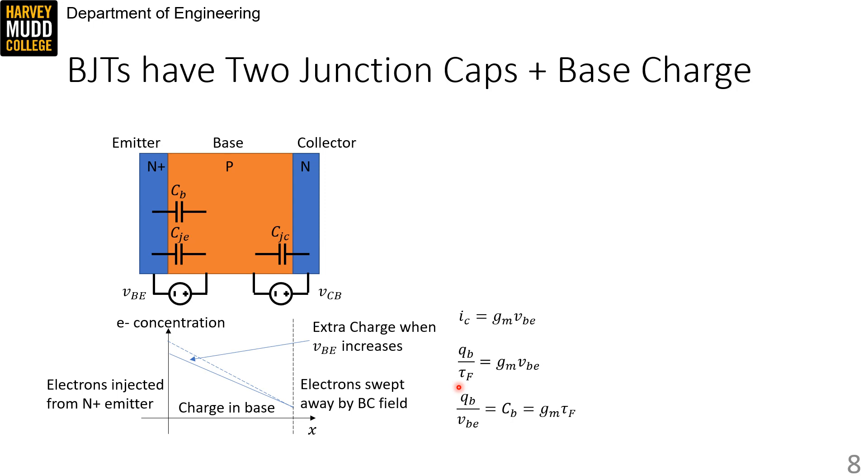Rearranging slightly, small signal charge divided by small signal voltage is like dQ/dV, so we call it CB and note that it's equal to GM times tau F, the base transit time.